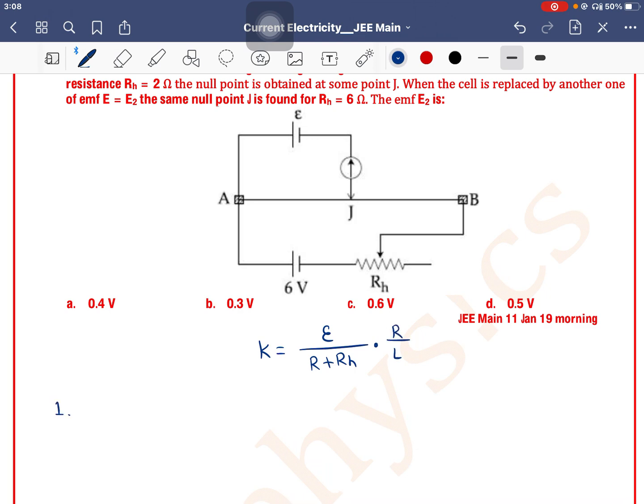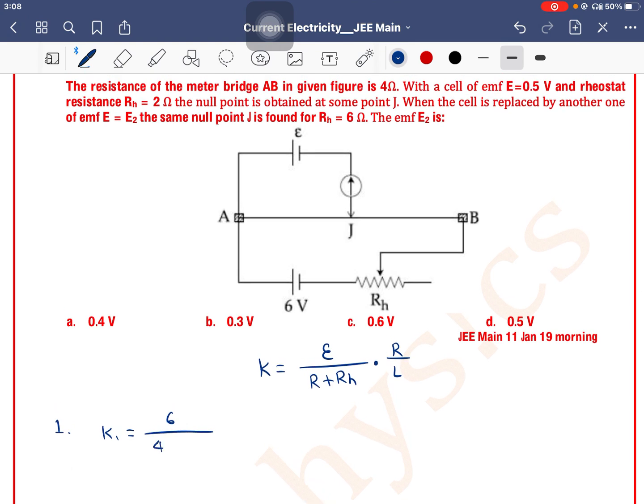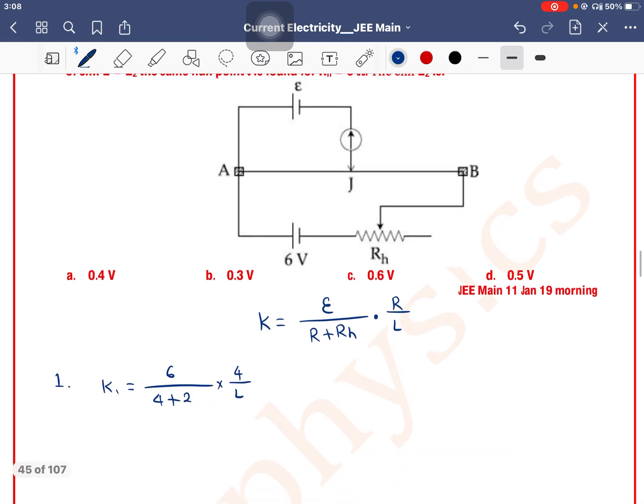So in the first case, the null point J is equal to E divided by L. Resistance of wire, how much is it? It is 4 ohm. Rheostat resistance, how much is it? 2 into 4 divided by length, L is not given. So this is 6, this is 6 cancel. K1 value, what will be 4 divided by L. This is the value of K1 in the first case.